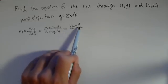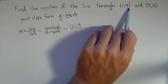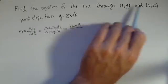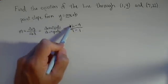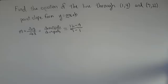So because I did 12 minus 4, in the denominator I want it to be 7 minus 1. Check. Here's the point 7,12. Here's the point 1,4. Outputs on top, inputs on bottom.